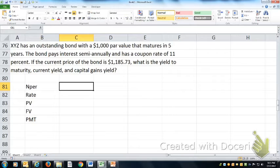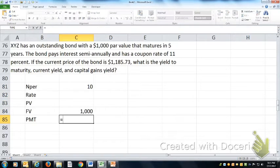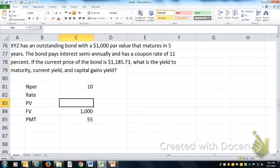So it matures in five years, but it makes payments twice a year, so there's ten total payments. The par value is always $1,000, so if it has a coupon rate of 11%, it pays $110 a year in two installments of $55 each. The price of the bond is currently $1,185.73.